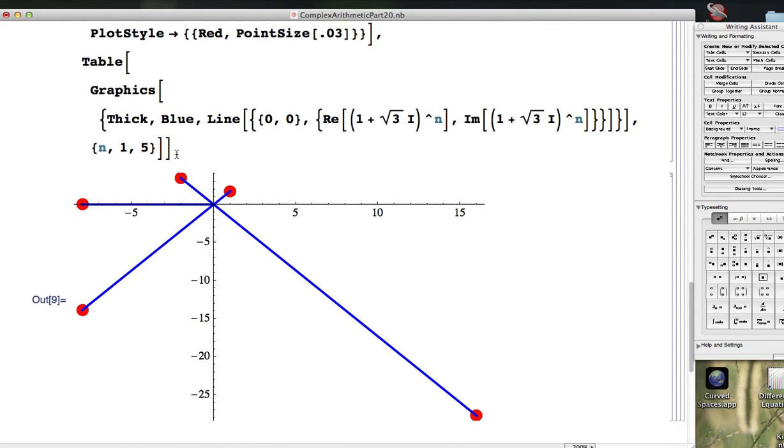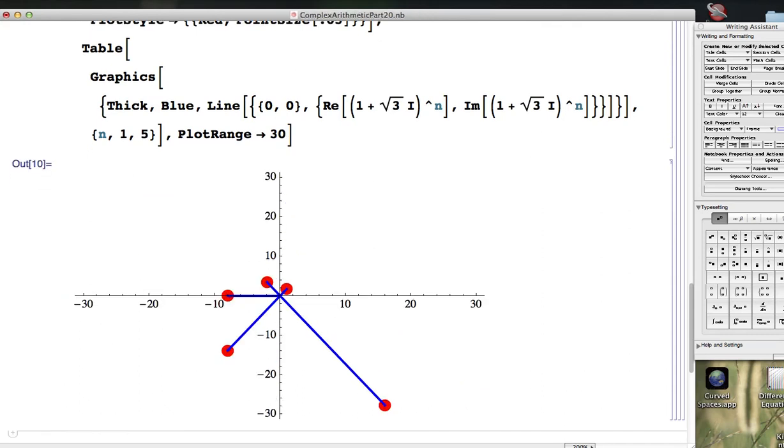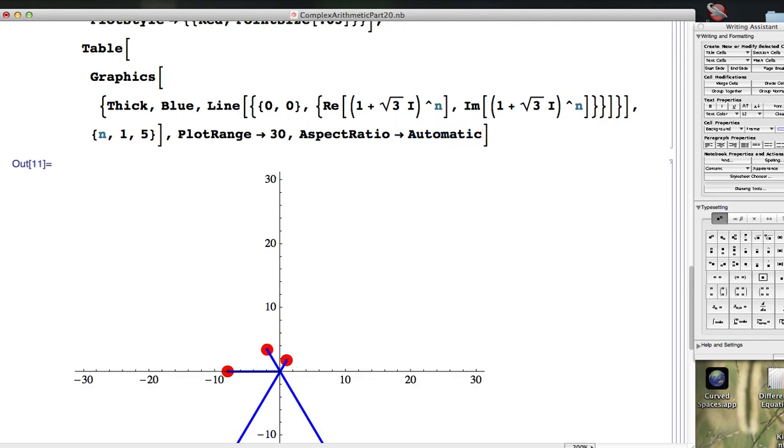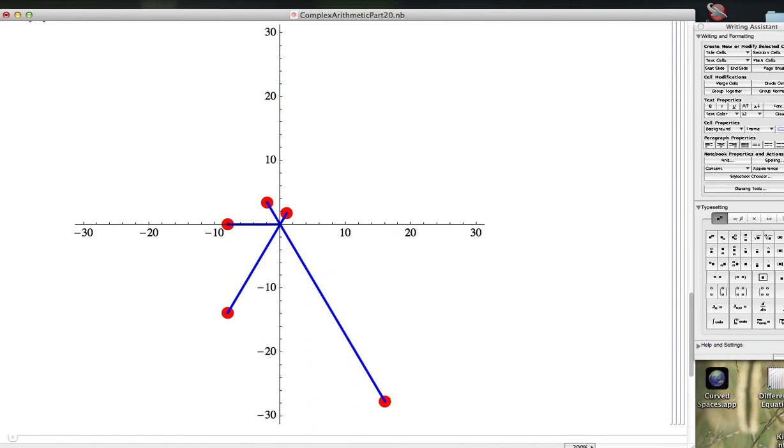So I'm going to add some options here. First of all, I'm going to make the plot range bigger. I'm going to go from 30 to 30 in all directions. And then to make it a little bit more true as far as the angles go, I'm going to use aspect ratio arrow automatic. All right, so let's just take a look at this.